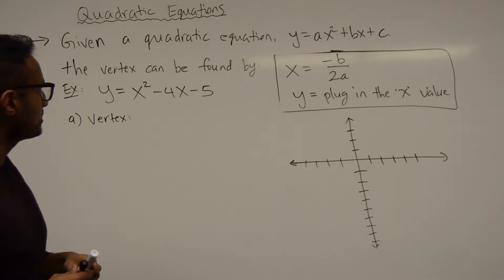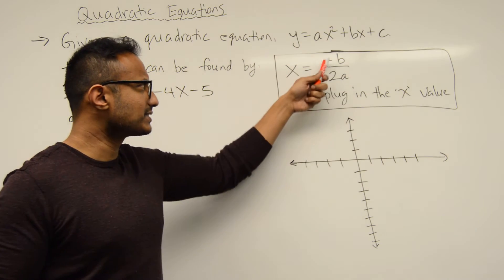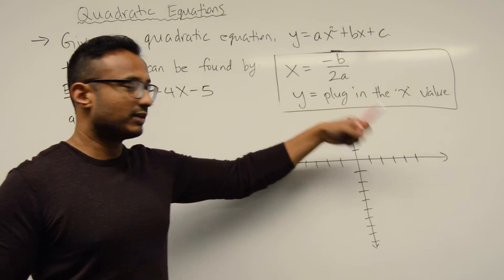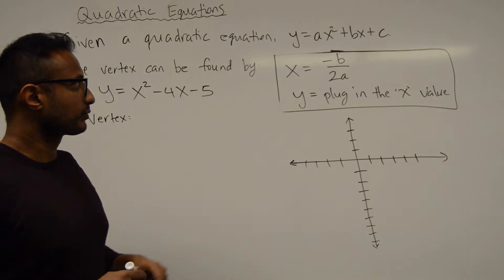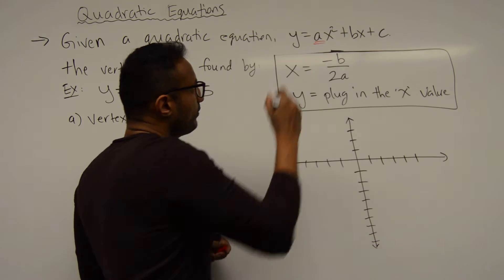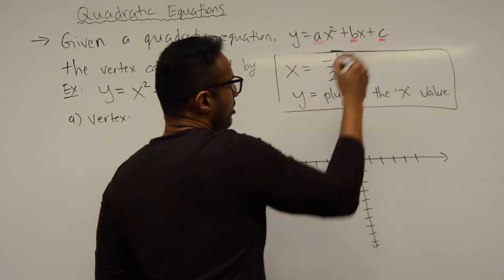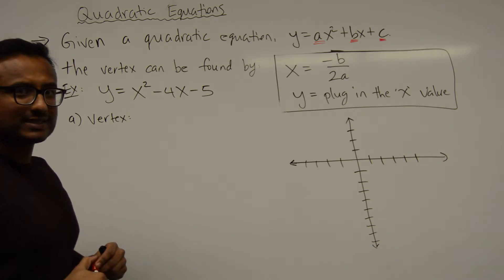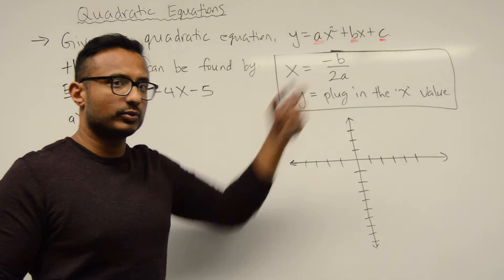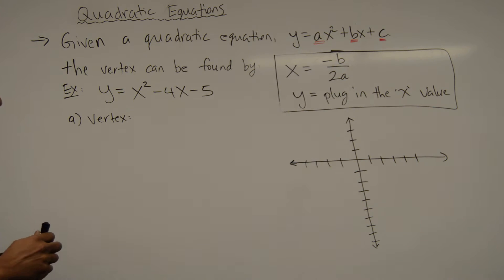The vertex can be found by the following steps: the x-value is negative b over 2a, and to get the y-value you plug in the x-value that you get from negative b over 2a. Our a-value is the coefficient of x², the b-value is the coefficient of x, and c is the constant. Even though c is not used in the formula x = -b/2a, we still have to be aware of what the constant is.